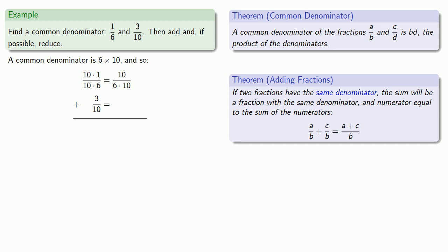How about this other fraction, 3 tenths? Well, again, we want our denominator to be 6 times 10. And we have a 10, but we're missing a factor of 6. So we'll supply it. But we also have to multiply our numerator by 6. Again, we'll leave our denominator in the factored form 6 times 10, but multiply out the numerator. And now our fractions have the same denominator, 6 times 10. So we can add the numerators, 10 plus 18. So we'll get a fraction with numerator 28 and denominator 6 times 10.